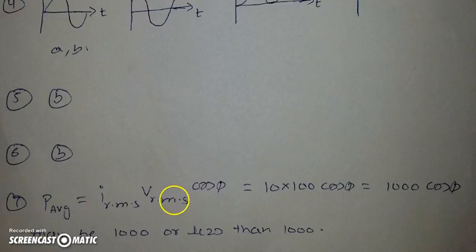So as these values are 10 and 100, cos phi will be there, and the overall value will be 1000 into cos phi. It may be less or equal to 1000, because cos phi will be either 1 or less than 1. Okay, thank you.